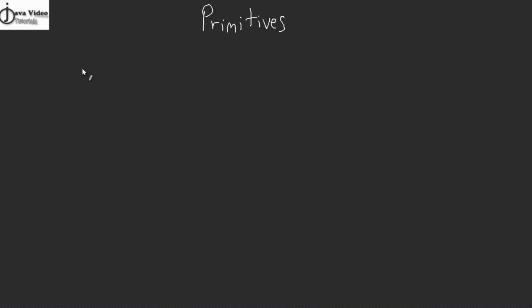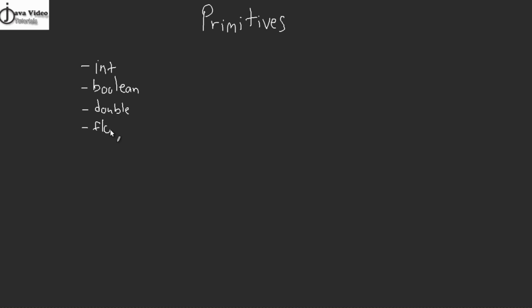What is a primitive? Well, you've seen it before. It's essentially just a variable type that is a little bit special. It has a special syntax in the way it's actually written out or typed into your IDE, your Spring Source Tool Suite. Integer, boolean, double, float, char — you should have come into contact with all of these variables either through the video tutorials or through the homework. These are known as primitives.